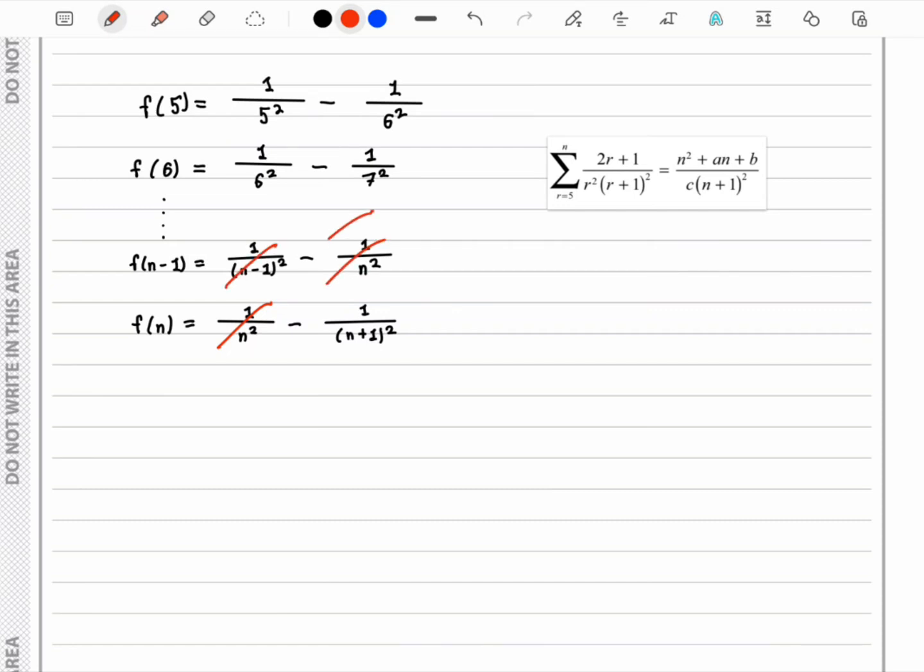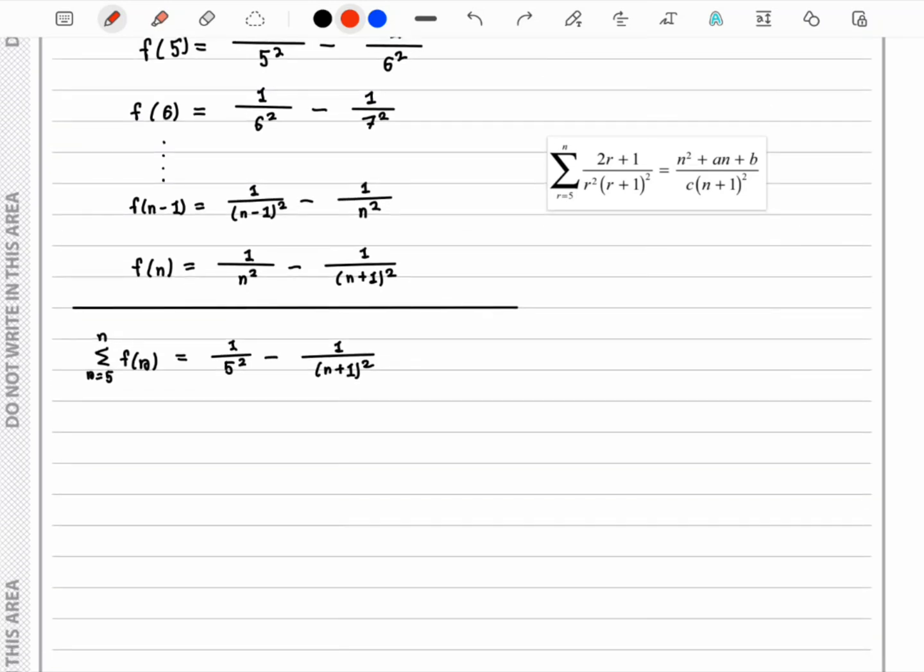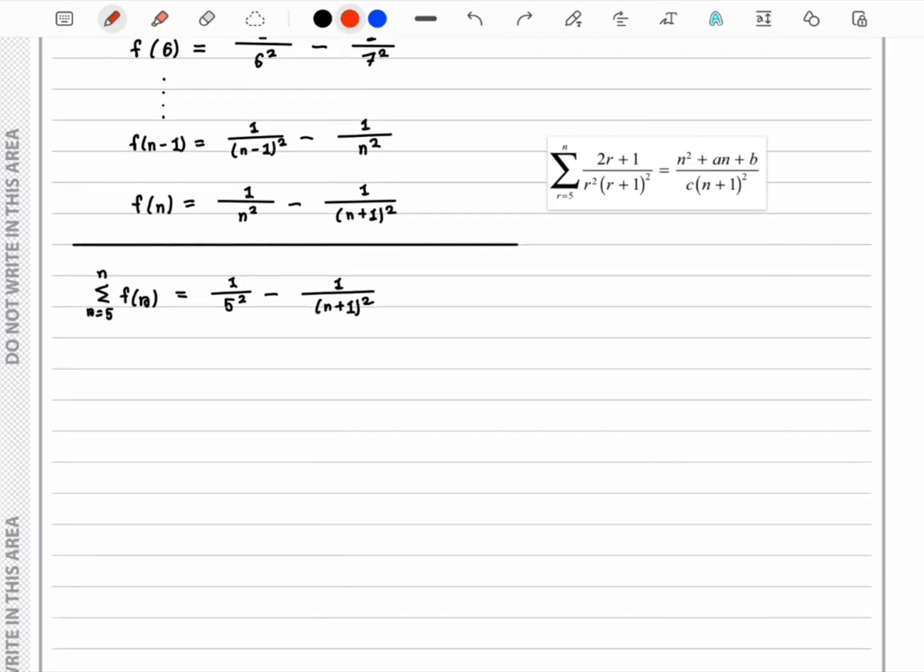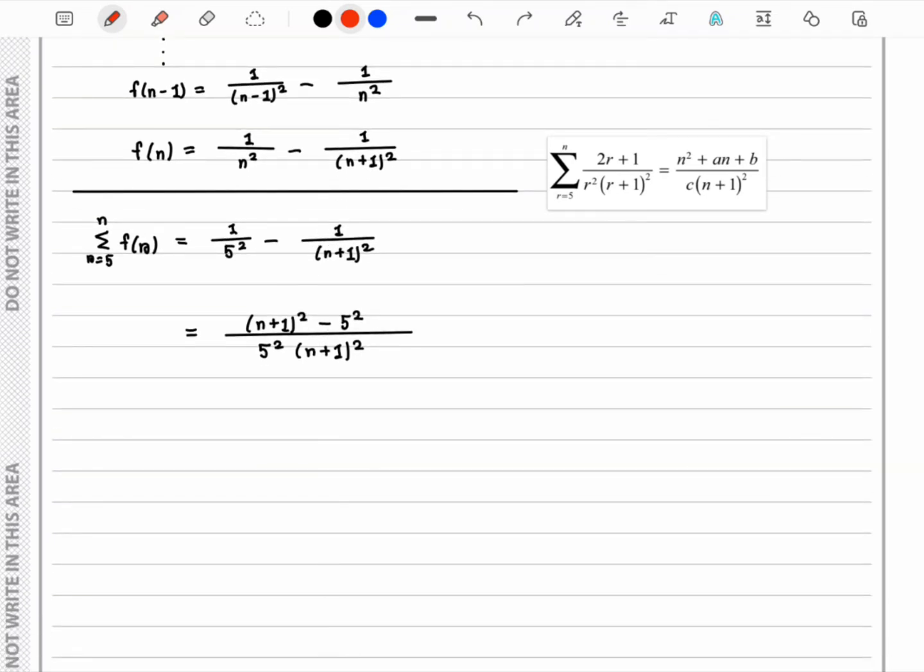So we can write that the sum from 5 to n is 1/5² minus 1/(n+1)². From there, we take a common denominator and get this expression. If we expand this, we can get the expression that the question requires from us.